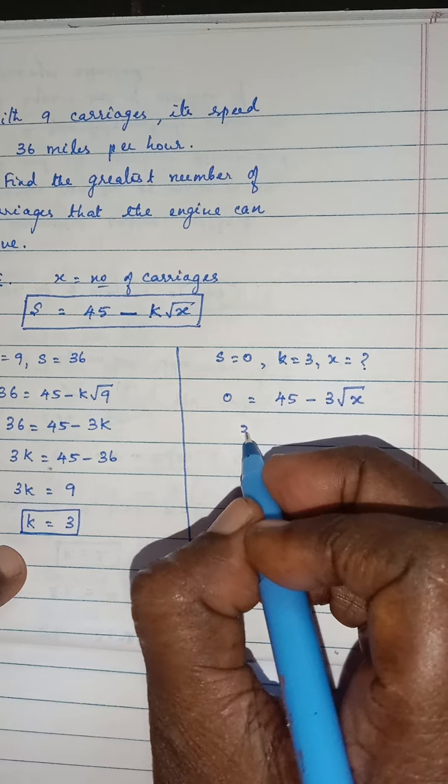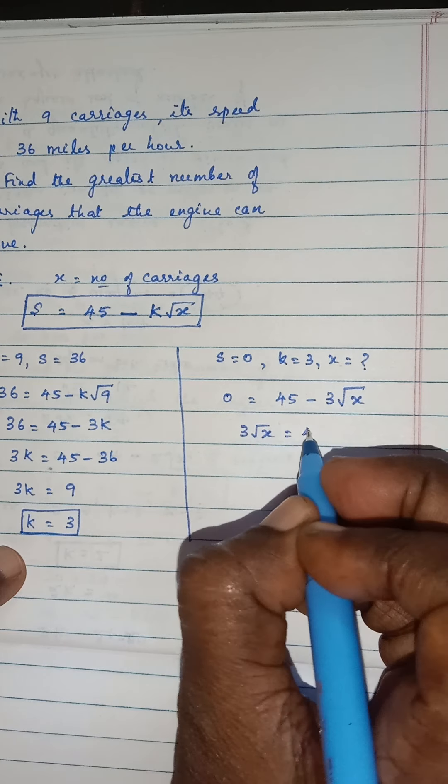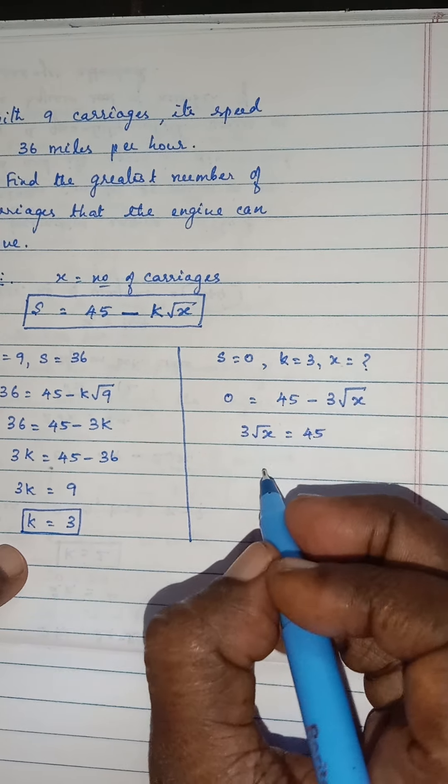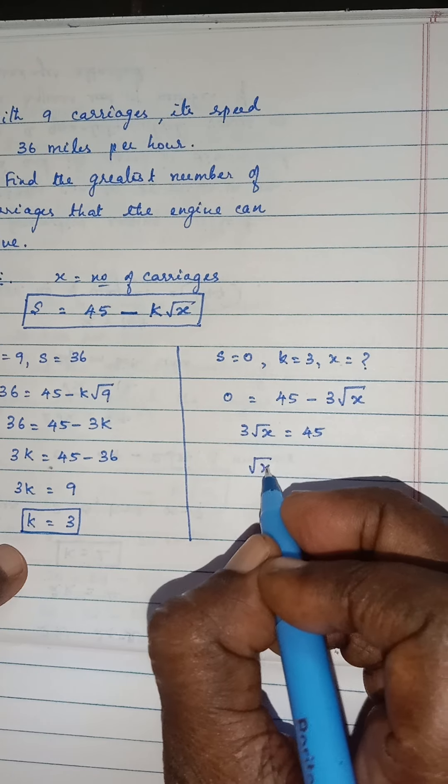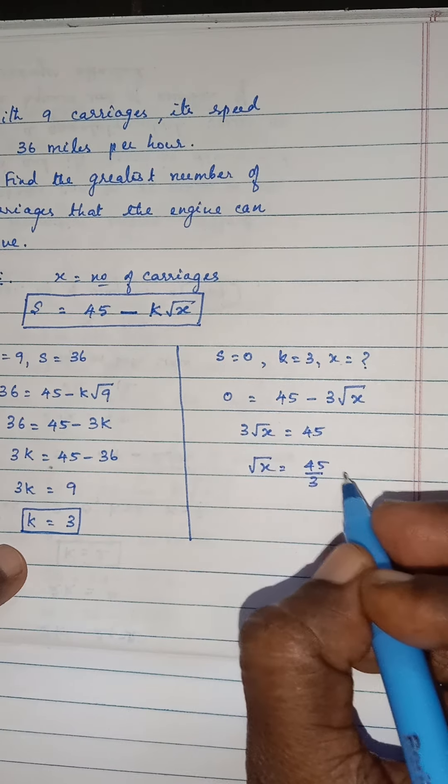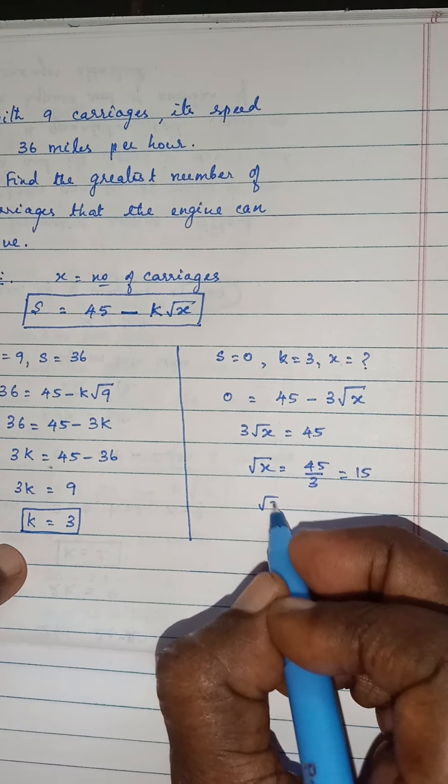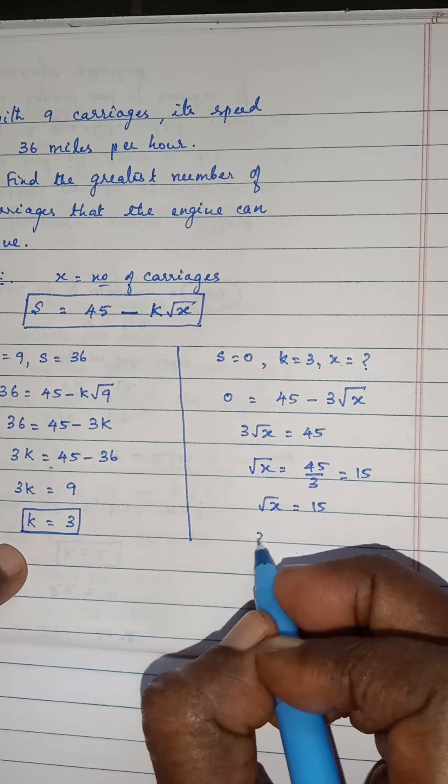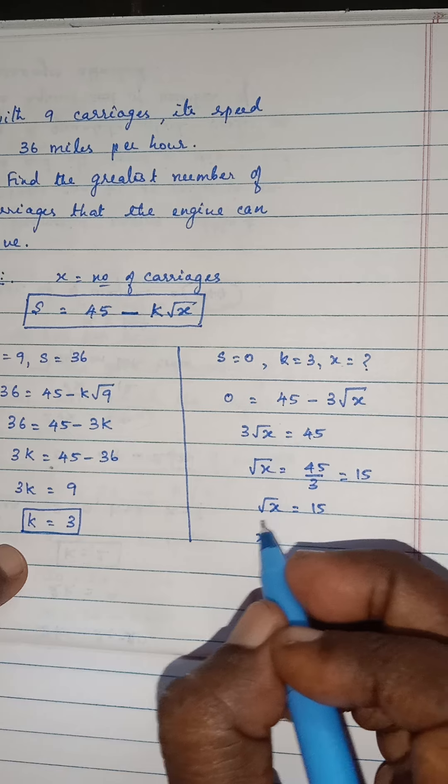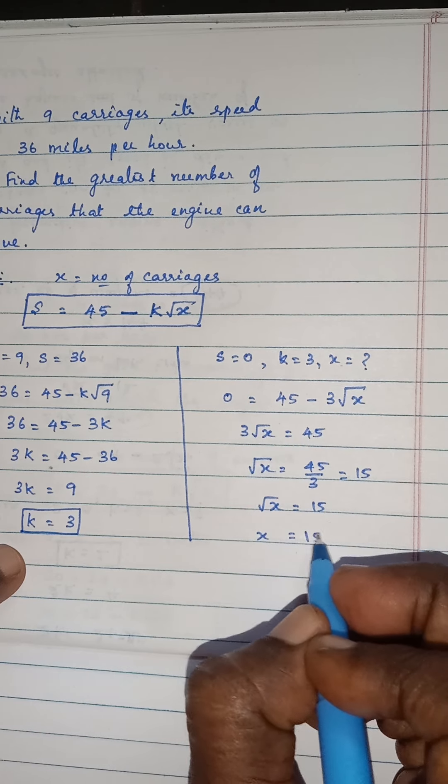3 root x is equal to 45. Dividing by 3, root x is equal to 15. So x equals the square of root x. Root x whole square is 225.